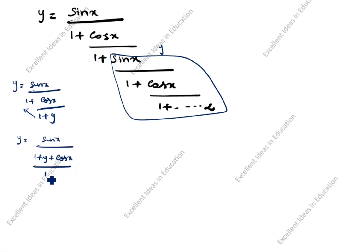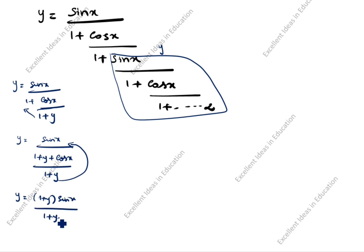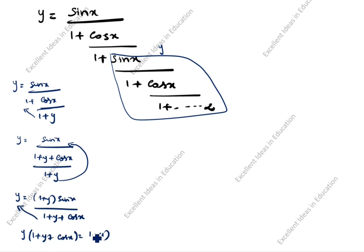Divided by 1 plus y. This 1 plus y goes above: y is equal to (1 + y) times sin x divided by (1 + y + cos x). This one goes here, so y times (1 + y + cos x) equals (1 + y) times sin x.